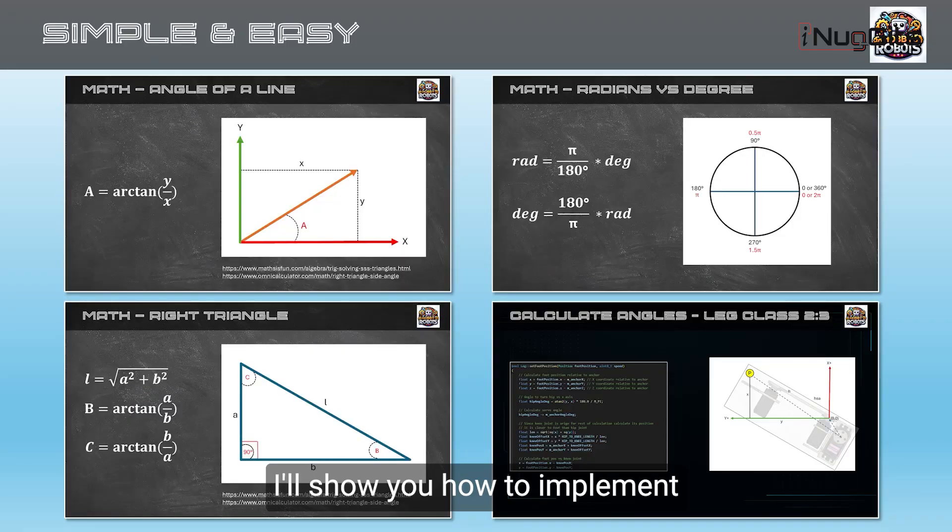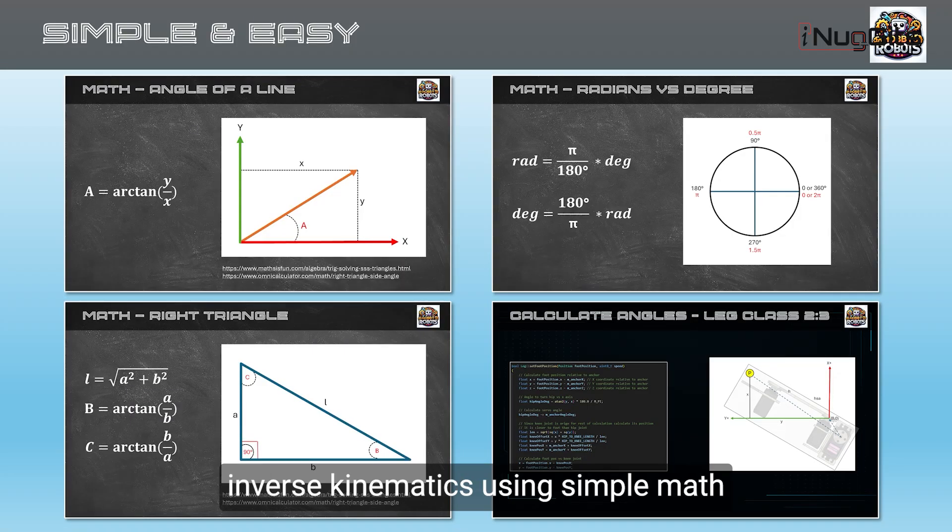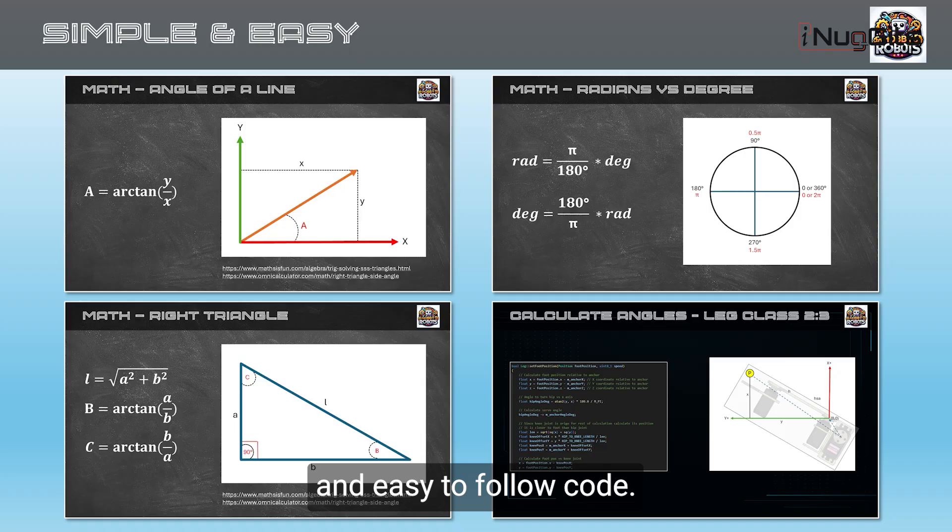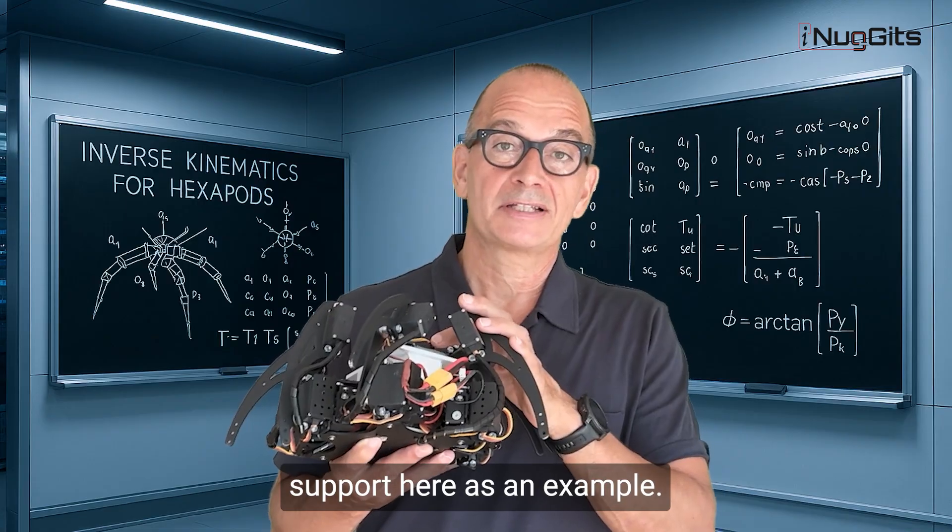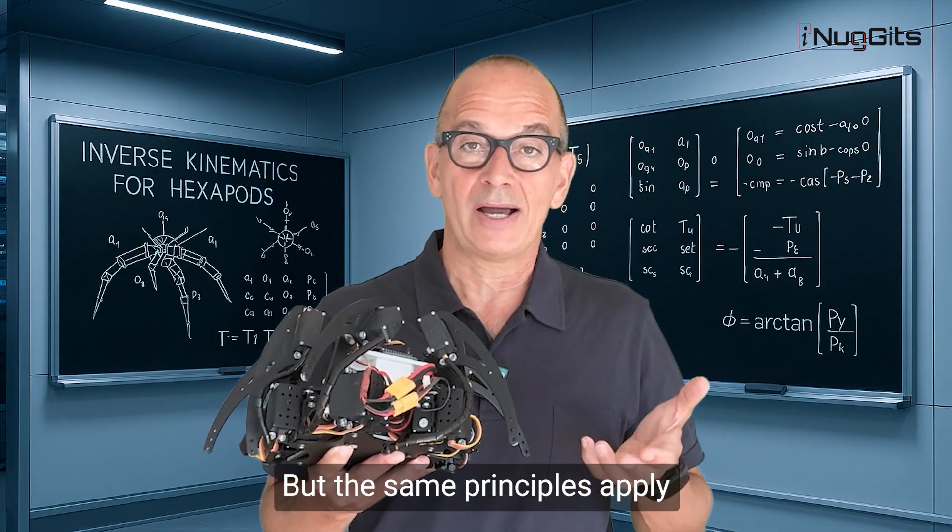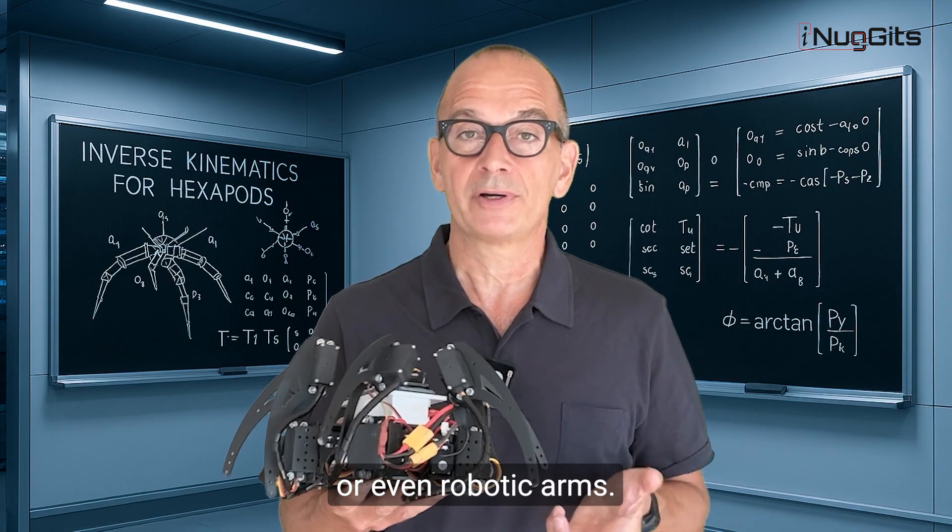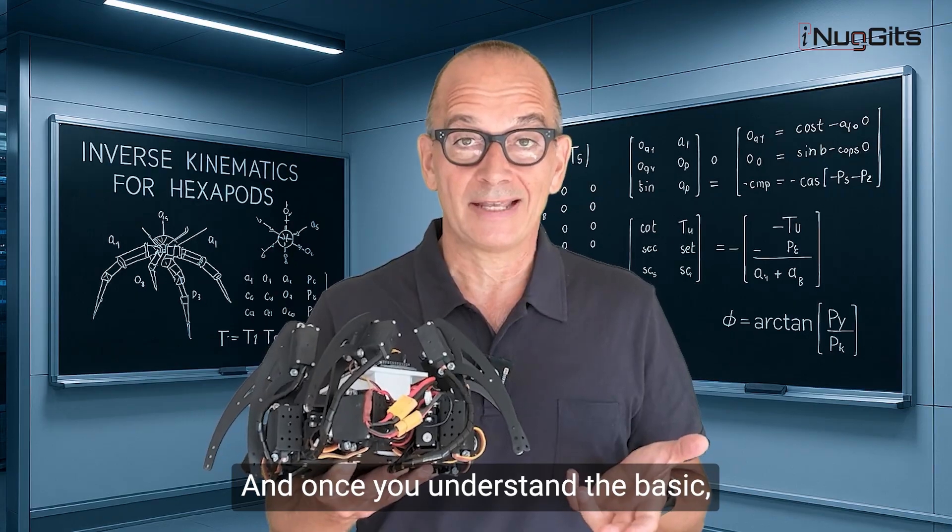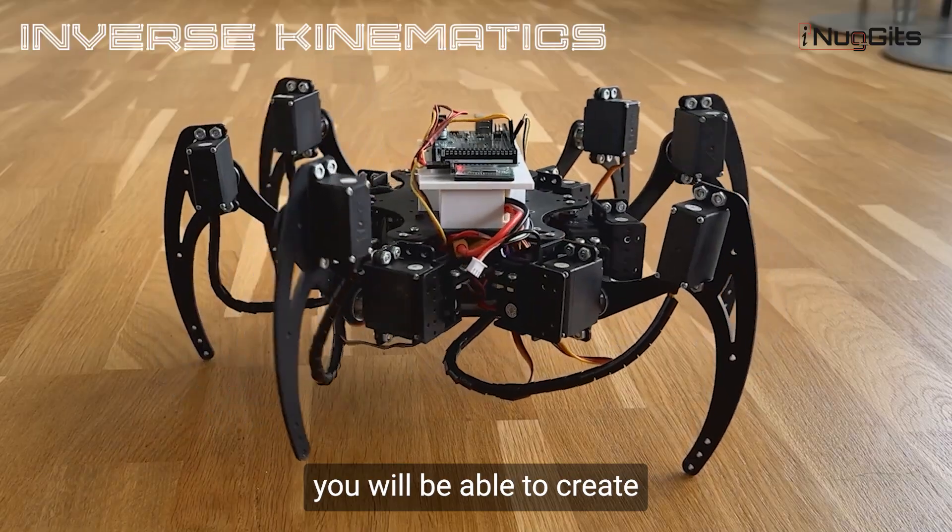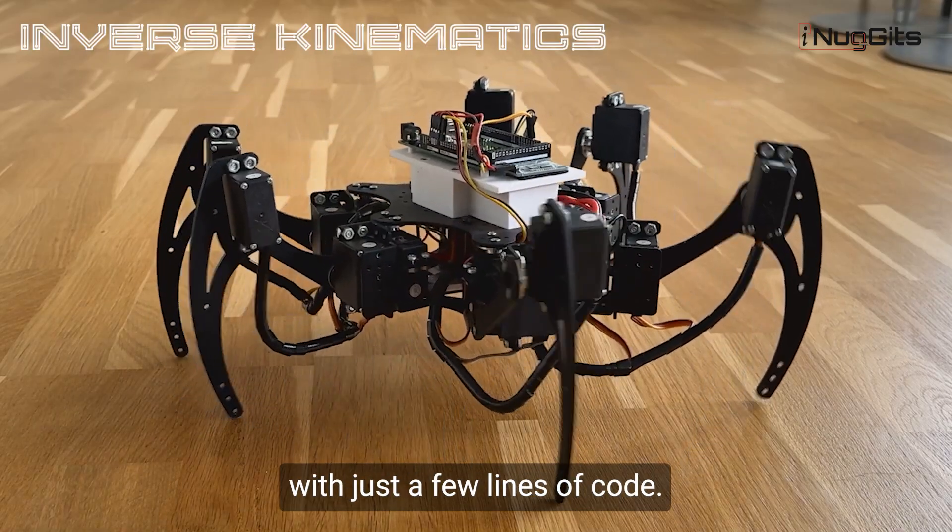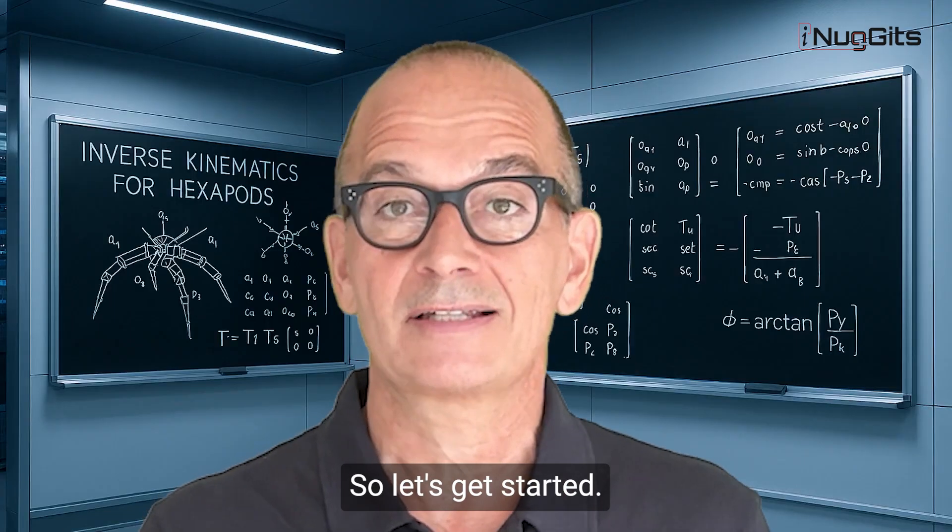I'll show you how to implement inverse kinematics using simple math and easy to follow code. No advanced math degree required. We'll use my hexapod here as an example, but the same principles apply to any legged robot or even robotic arms. And once you understand the basics, you will be able to create really smooth, complex movements with just a few lines of code.